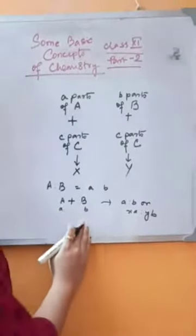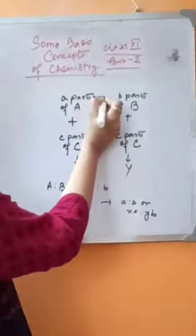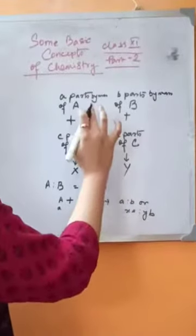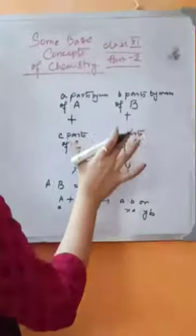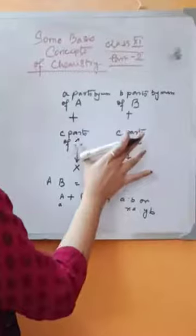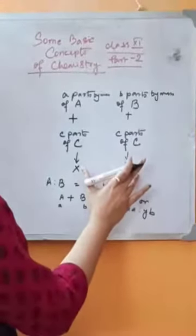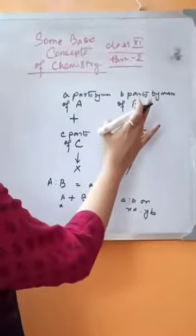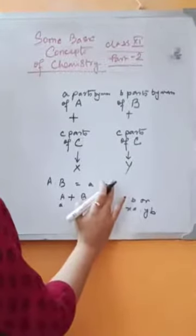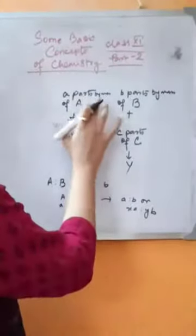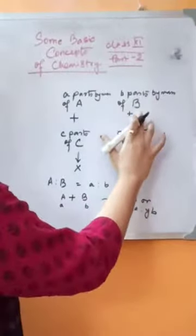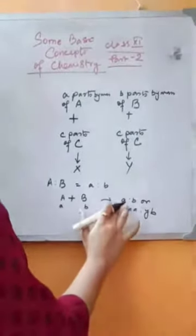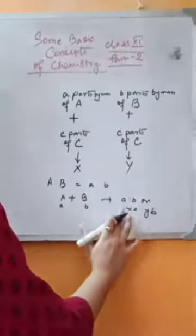I repeat the entire explanation once again. If I take A parts by mass of element A and B parts by mass of element B, and element A and element B separately combine with a fixed mass of element C, then we are getting two compounds, capital X and capital Y respectively. The ratio of the masses of element A and element B will be small a is to small b. According to this law, if A parts by mass of element A and B parts by mass of element B combine together directly, then the ratio of their masses will also be either A is to B or XA is to XB, where X and Y are simple whole numbers.